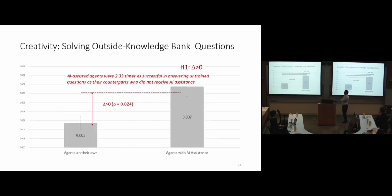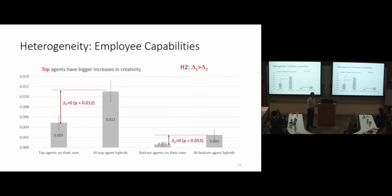Here's the results. The dependent variable here, or the y-axis, is creativity ratio. You get two bars here, it's pretty self-evident that AI-assisted agents were 2.33 times more creative than solving outside the knowledge bank questions. That's the creativity measurement. And then we look at the heterogeneity depending on top and bottom agents. Top agents are working for more than one year with more experience at the workplace. Bottom agents are rookies and new hires. Bottom agents increase a little bit, marginally significant. With AI help for this repetitive task, they do benefit on average. But the bigger benefit is top agents. They have a bigger burst in job creativity. They come up with new solutions for the problems asked from the customers.